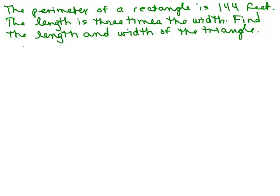I like to draw a picture. So I'm going to draw a little picture of a rectangle and I'm going to think of the length as the long side and the width as the short side. So I read through this carefully. The perimeter is 144, so I know all the way around is 144.